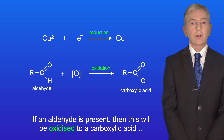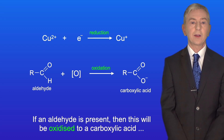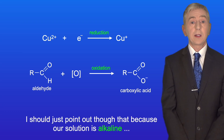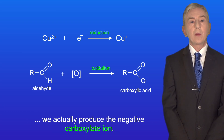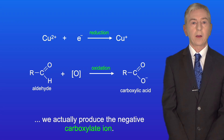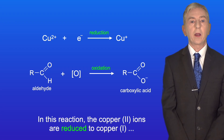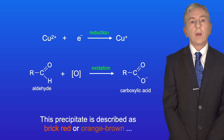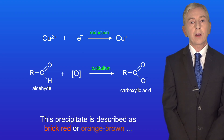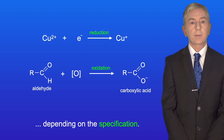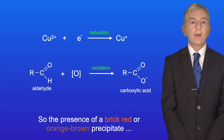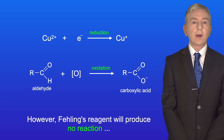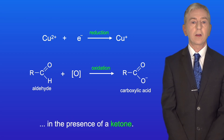If an aldehyde is present, it will be oxidized to a carboxylic acid by the copper(II) ions in Fehling's reagent. Because the solution is alkaline, we actually produce the carboxylate ion. In this reaction, the copper(II) ions are reduced to copper(I), forming a precipitate of copper(I) oxide. This precipitate is described as brick red or orange-brown, depending on the specification. The presence of this brick red or orange-brown precipitate indicates an aldehyde. Fehling's reagent will produce no reaction in the presence of a ketone.